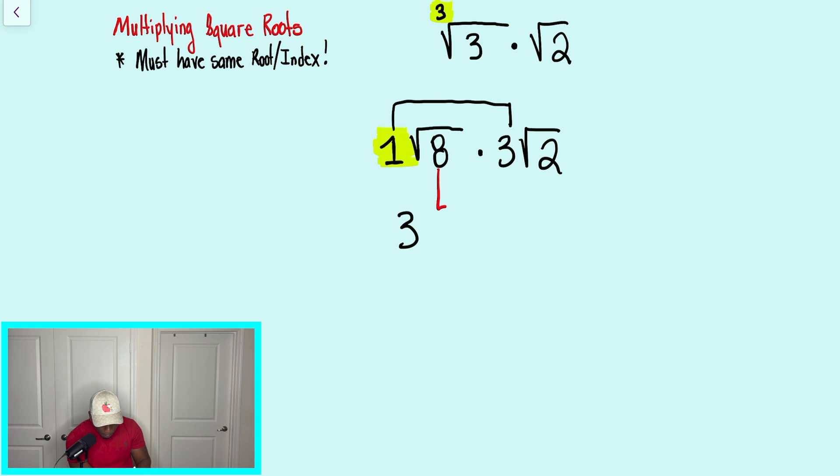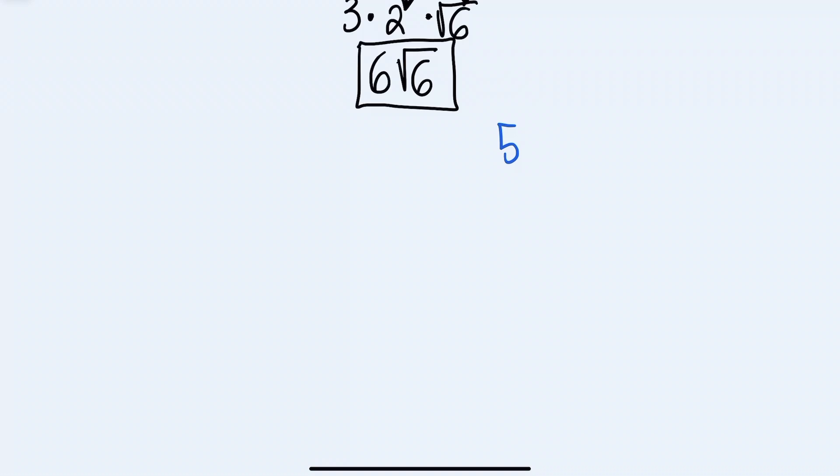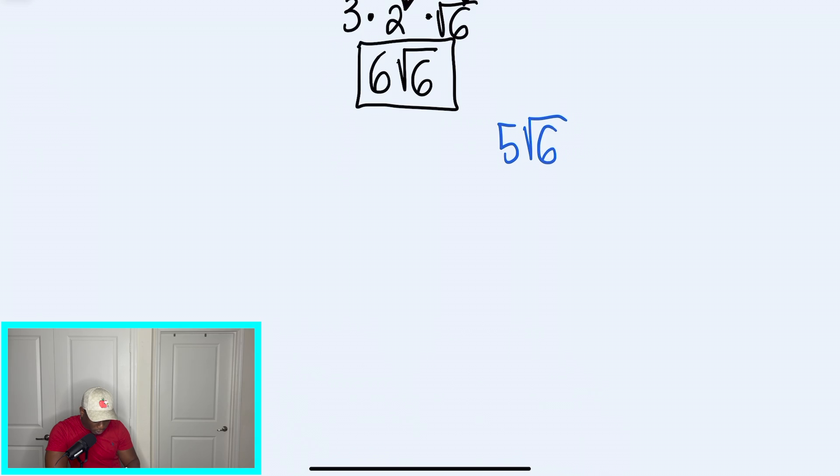And then we're going to go back and multiply our radicals together. And when we multiply our radicals together, we're going to get 5 radical 6. And we're going to multiply this by radical 27. So just like the first problem, if you've noticed, there is no number in front of radical 27.